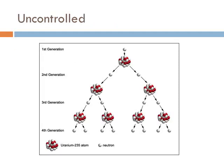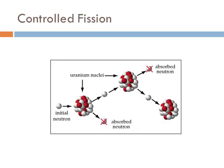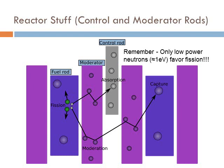In an uncontrolled reaction, for every split you get more than one split out, and it grows bigger and bigger. In a controlled reaction, you absorb the extra neutrons to prevent them from splitting other atoms, because you only want exactly one more reaction per split. The way we achieve this is by having a method to absorb those excess neutrons.